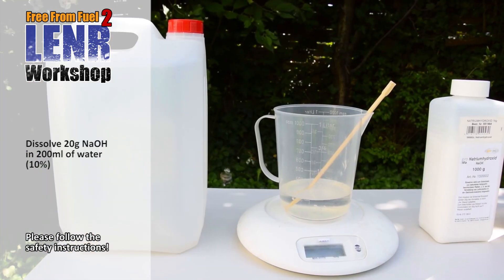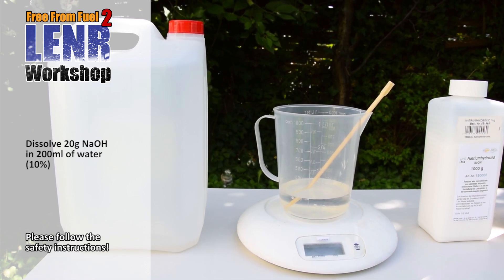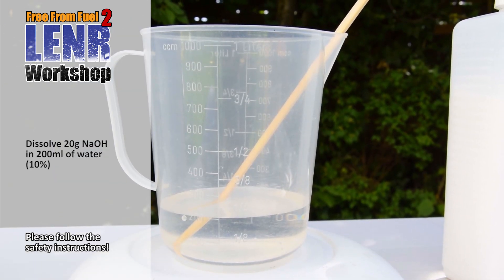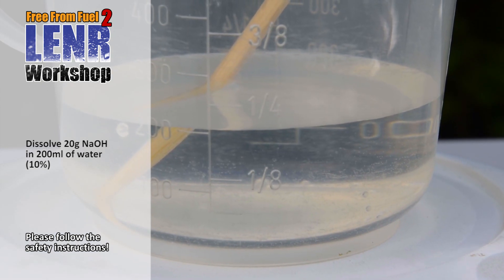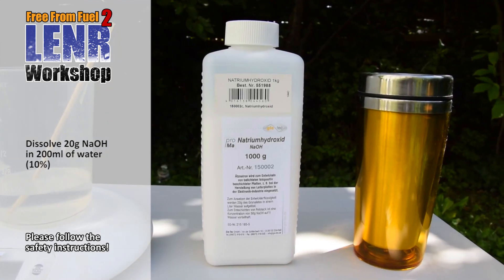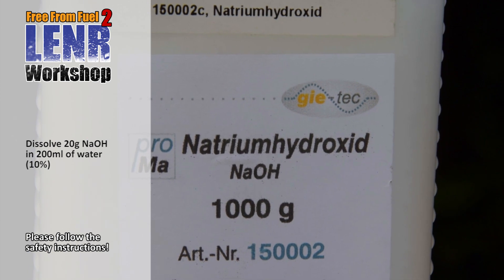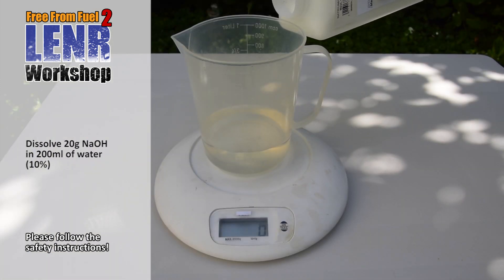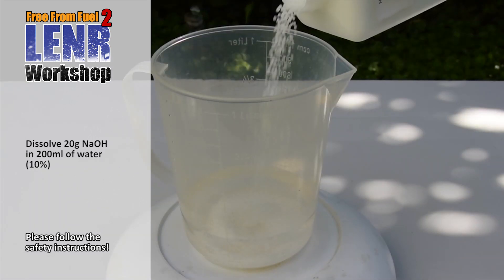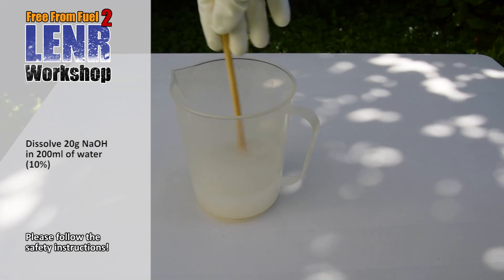Here I took 200 ml of distilled water, but ordinary tap water also does it. We add 10% of NaOH to the water to make the current flow. You get it from the wholesale store. For 200 ml of water we need 20 g of NaOH, this is 10%. Stir it well. It looks like a fine soap solution.